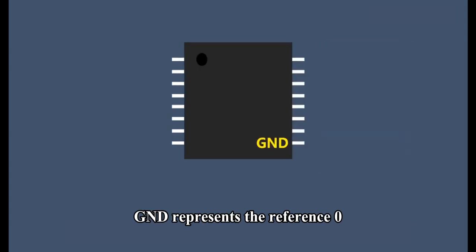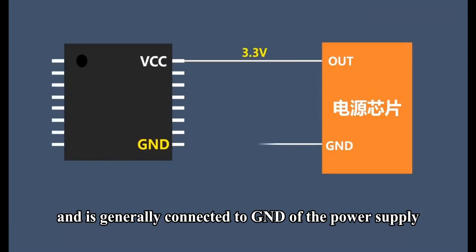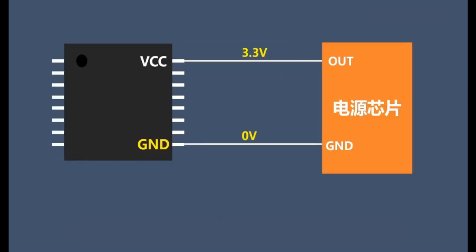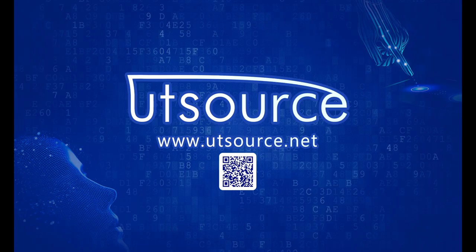GND represents the reference zero-level pin of chip power supply and is generally connected to GND of the power supply. That's all for today's sharing. Thank you everyone.